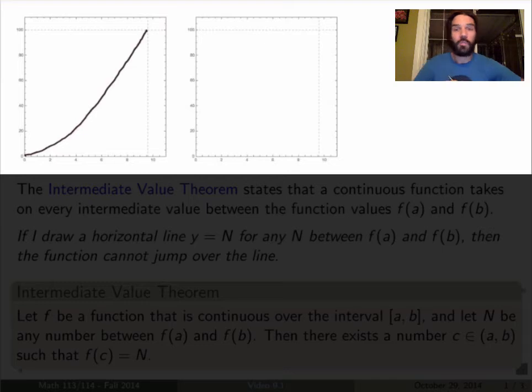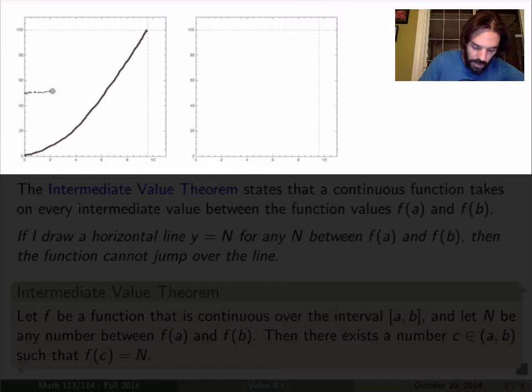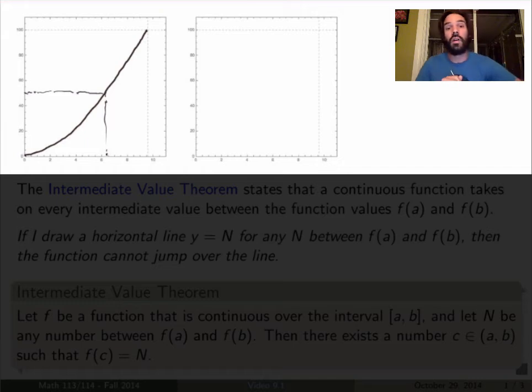So the Intermediate Value Theorem is telling me that if I pick any distance here between 0 and 100 meters, say 50 meters, then Usain Bolt must have gone through that distance at a certain time between 0 and 9.58 seconds. It's pretty simple.